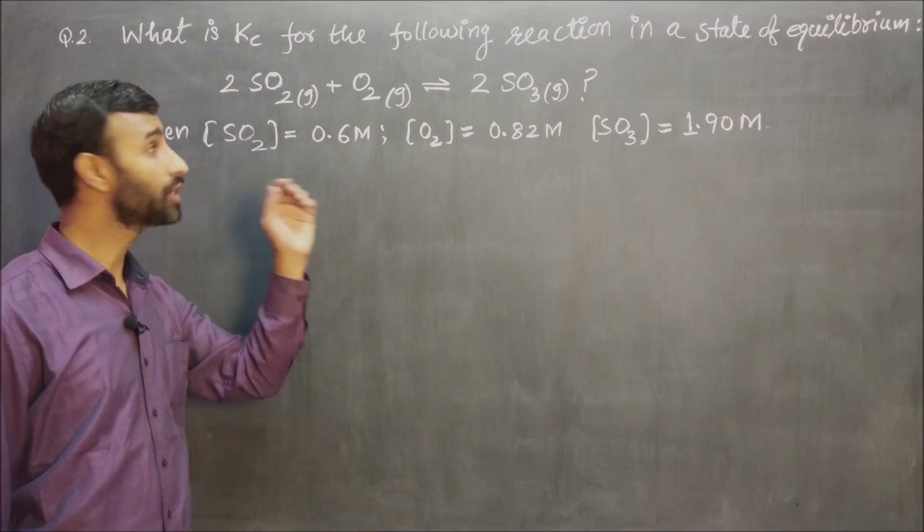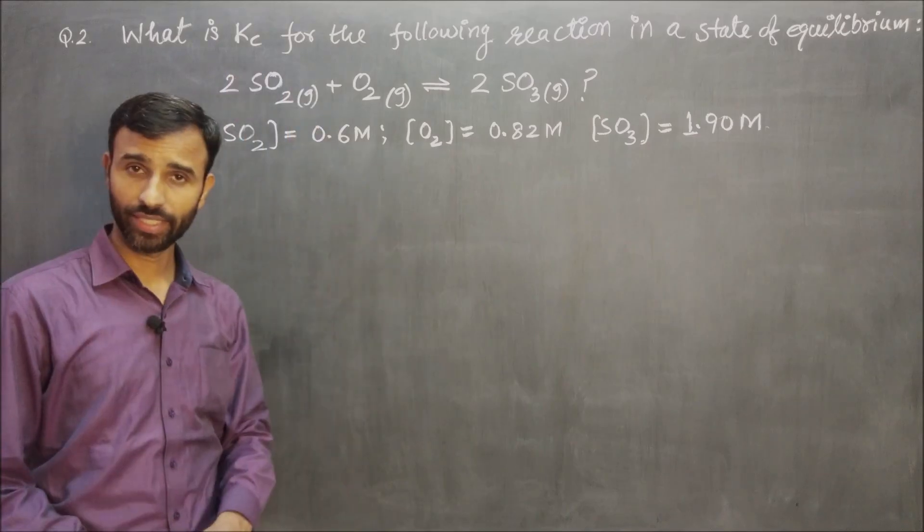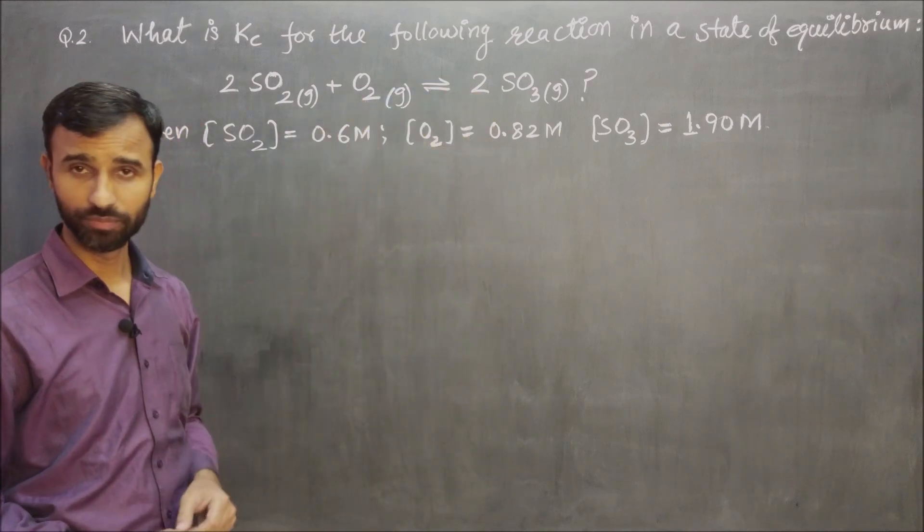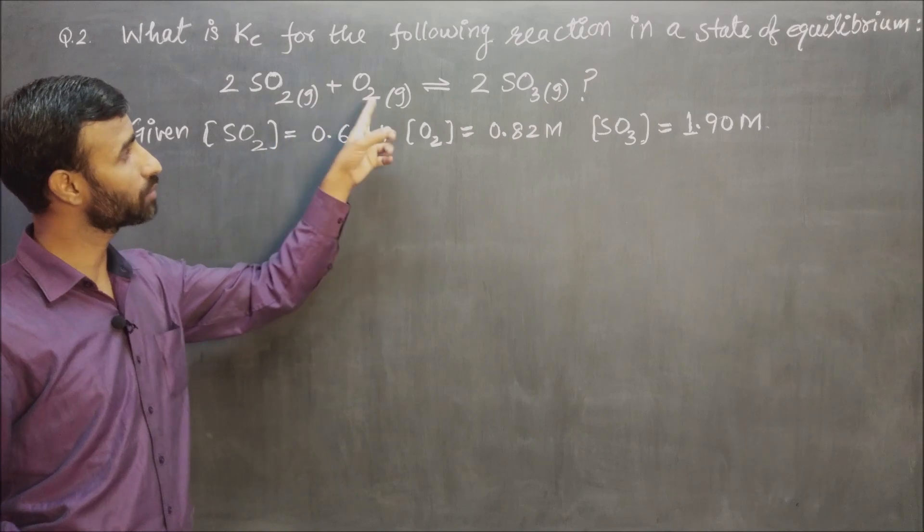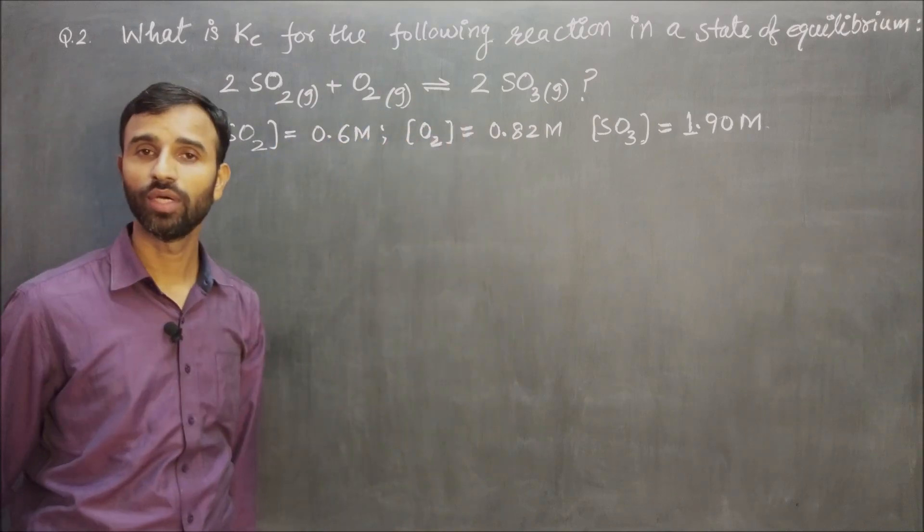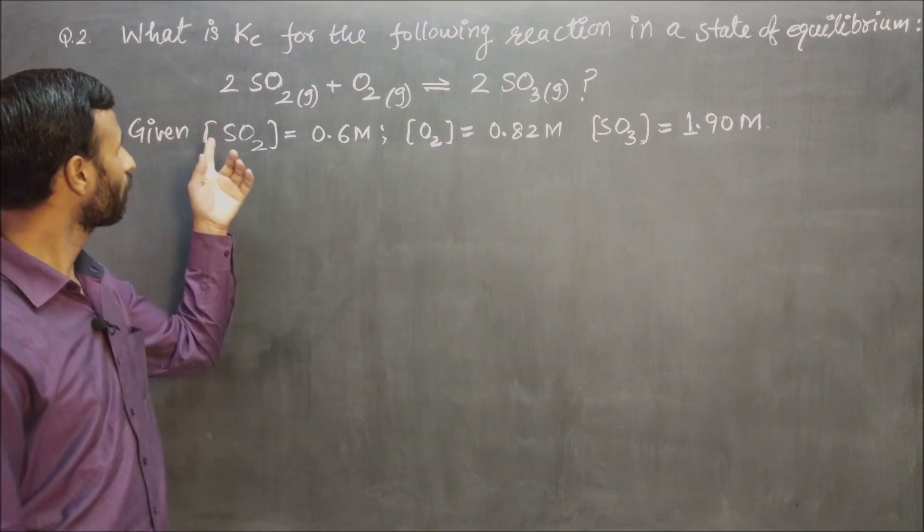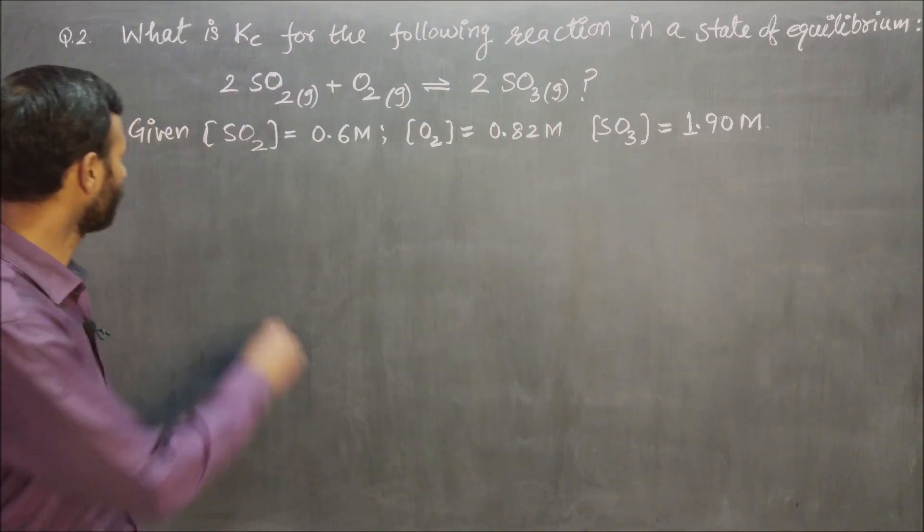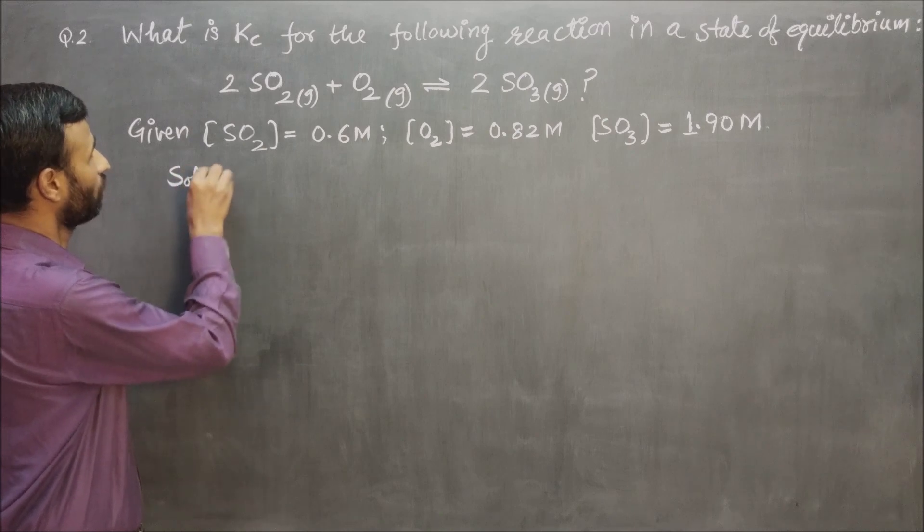So question number two is, what is Kc for the following reaction in a state of equilibrium? 2SO2 gas plus O2 gas to give 2SO3 gas. Concentrations of SO2, O2 and SO3 are given. So let us solve it.